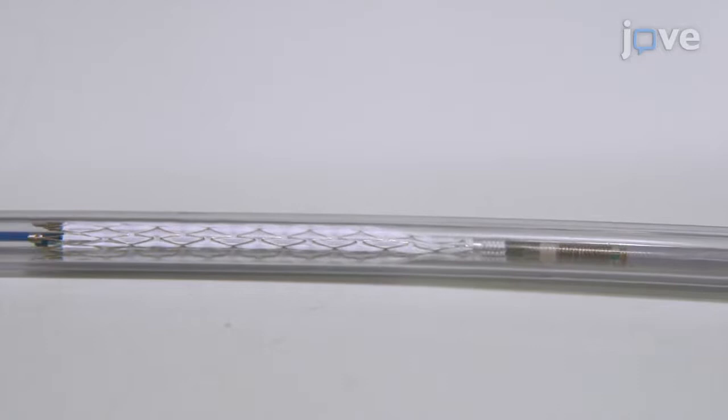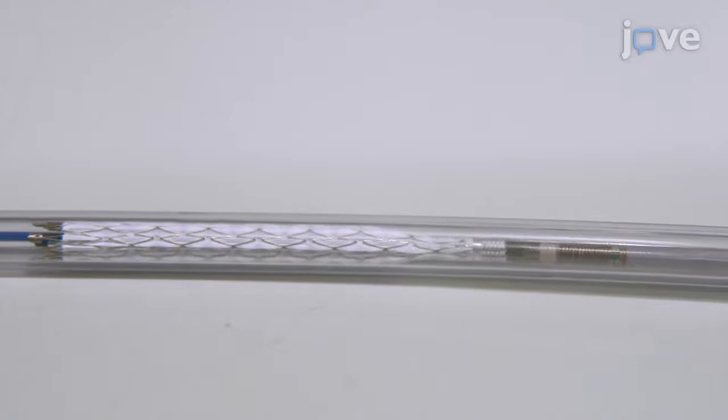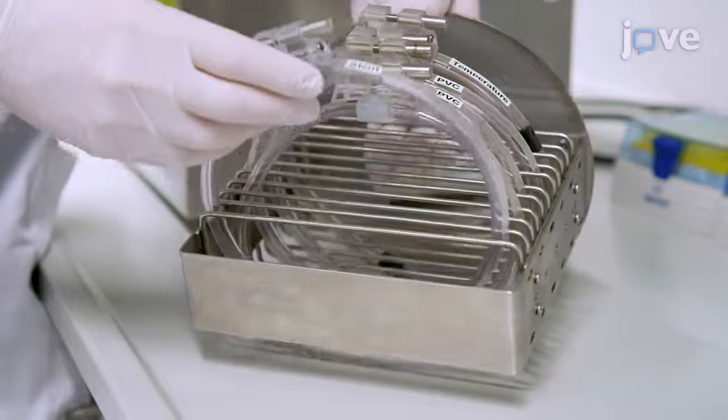When the appropriate number of loops for the experiment have been generated, secure the loops in the loop cradle of the rotation unit outside of a 37 degree water bath and attach the loop cradle to the rotation unit inside the water bath.